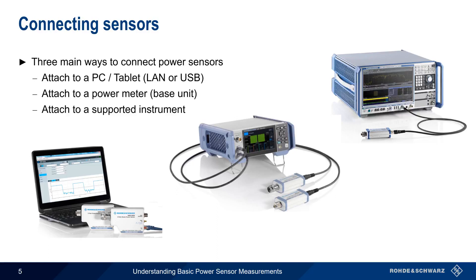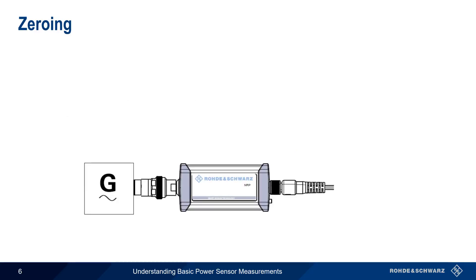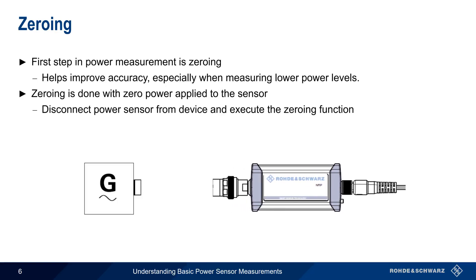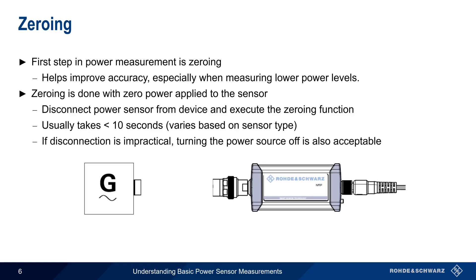No matter which way we interface to the sensor, the basic measurement procedure and results are the same. After we're sure that our sensor is properly connected to our PC, power meter, or instrument, the first step in any power measurement is something called zeroing. Zeroing helps to improve accuracy and ensure the validity of our measurement result, especially when we're measuring lower power levels. Zeroing is done with zero power applied to the sensor — this means physically disconnecting the power sensor from the device under test and then executing the zeroing function. This usually takes less than 10 seconds, but will vary based on the sensor type. Although zeroing should be done with the sensor physically disconnected, in many cases this is impractical, in which case turning off the power source is an acceptable alternative. Note also that many sensors will automatically abort the measurement if you try to zero them with power still on.